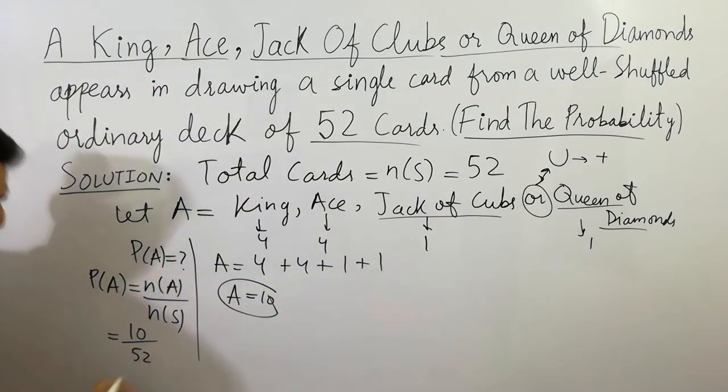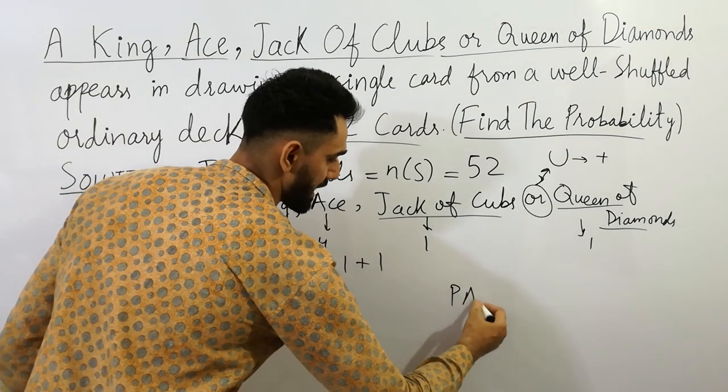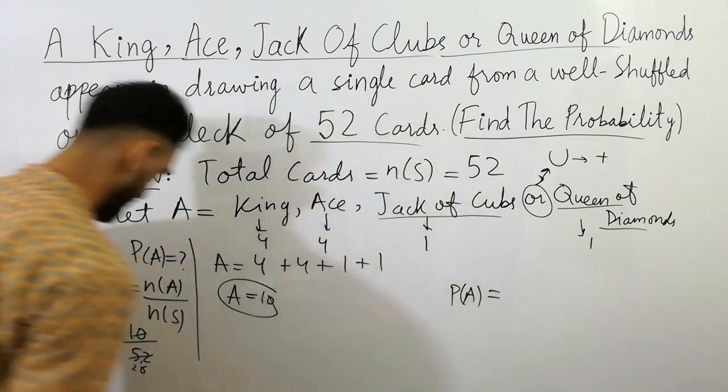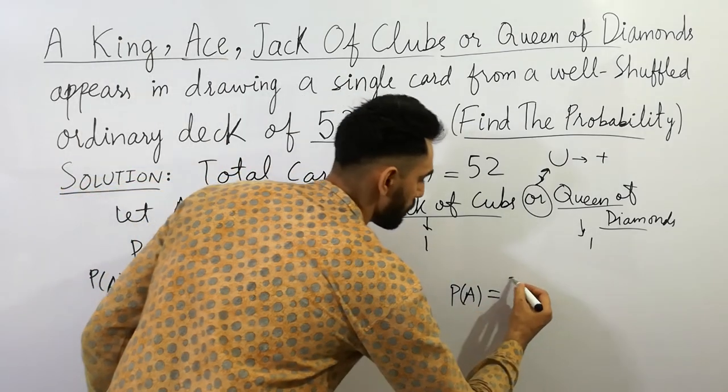So the probability is given here: ten over 52, which simplifies to 5 over 26.